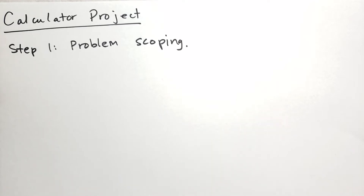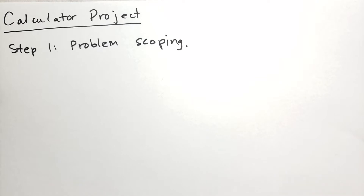By scoping, it's not so much definition as it is trying to put walls around the problem so that the problem can actually get solved in the time frame that we have available to us. For instance, every company has the problem of trying to make money, right? If you just had that as your problem definition, it's way too broad. You can't get any kind of specific thing to define a better project around it.